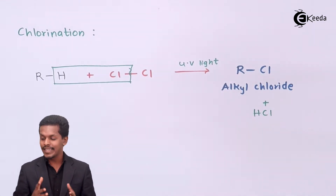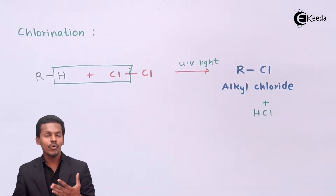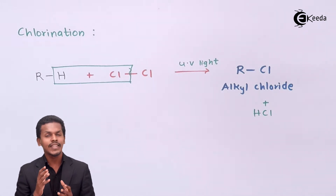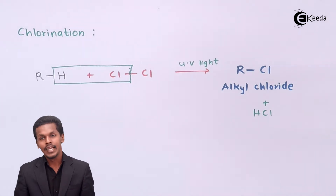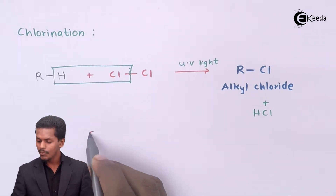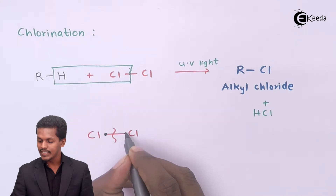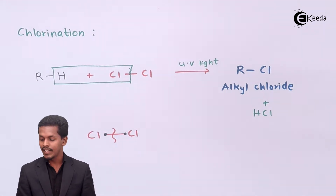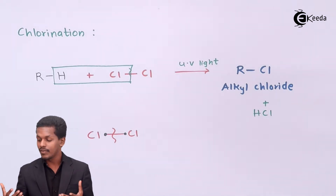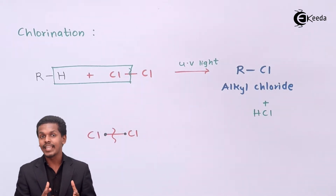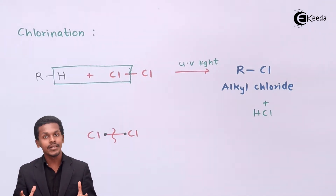This is how we prepare an alkyl chloride. Since we are using UV light to break the Cl–Cl bond, this reaction takes place via radical formation. When the Cl–Cl bond is broken, highly reactive chlorine radicals are formed. These radicals are very reactive and won't stop until all the hydrogen atoms of the alkane are replaced by chlorine atoms. This is what chlorination means — it doesn't stop at mono-substitution.